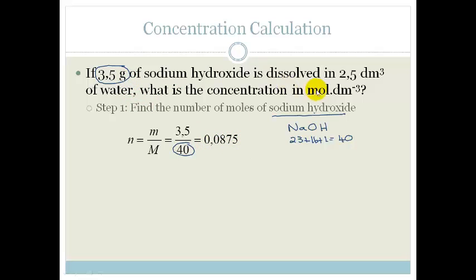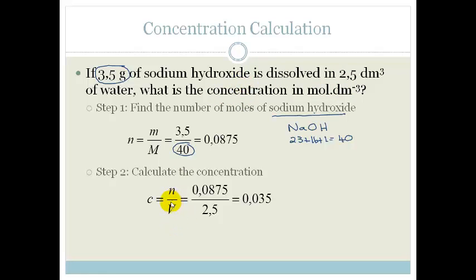So now we've got the number of moles and we have the volume, so we can calculate concentration. So concentration is number of moles over volume, which is 0.0875 divided by 2.5, because that's in decimeters cubed. And that gives us 0.035 moles per decimeter cubed. Please remember your unit, 0.035 moles per decimeter cubed.